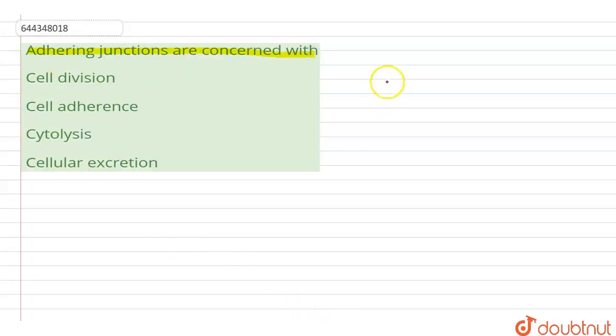So, these adhering junctions are the specialized junctions in the epithelial tissue. These are the intercellular junctions because they connect one cell to the other.